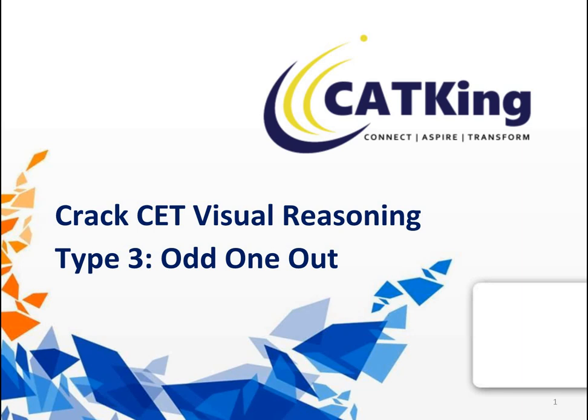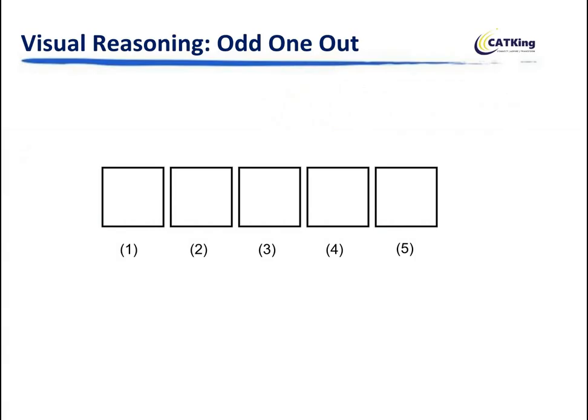Honestly, this is the easiest of all of them because it's very obvious kind of questions. So let's try and understand what you mean by odd one out when it comes to visual reasoning. What you would be given in the questions is a set of five images, like you can see above, and out of the five you have to select one which is odd.